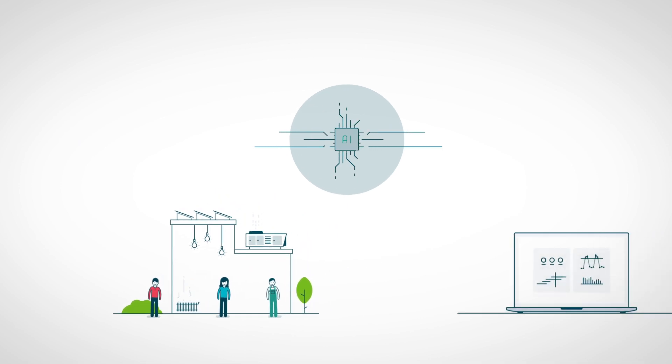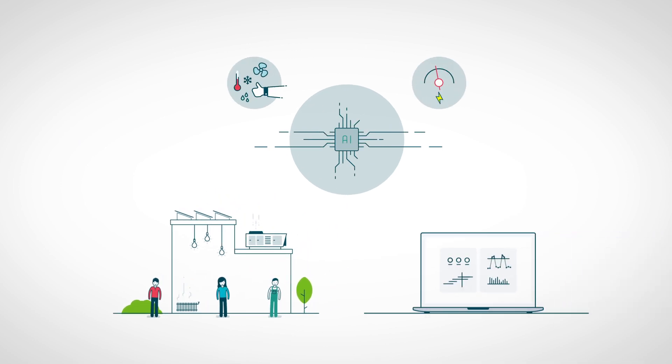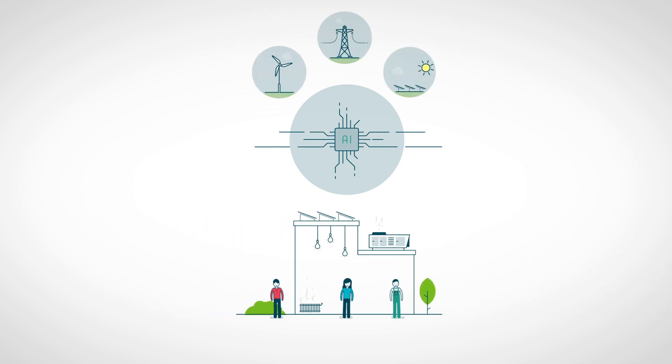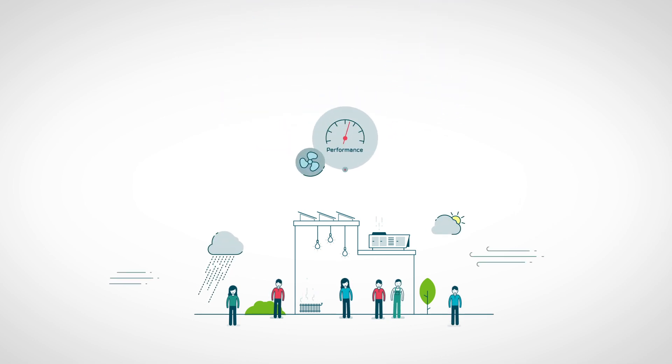Artificial intelligence combines historical and real-time data to optimize climate conditions and energy usage. It does so by taking into account the energy source and price, as well as the weather and use of the building.